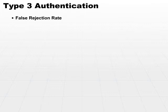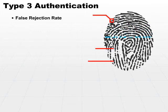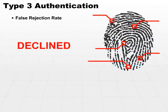What that means basically is, let's say we have a fingerprint scan. You put your finger on the scanner and it says no, you are not Michael Solomon. Well, I know that's not the case, but the authentication mechanism has wrongly rejected me as the true Michael Solomon.